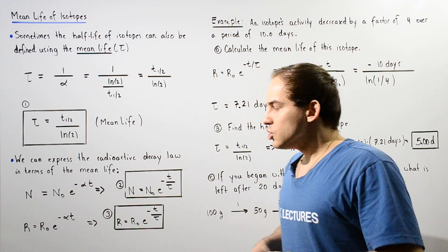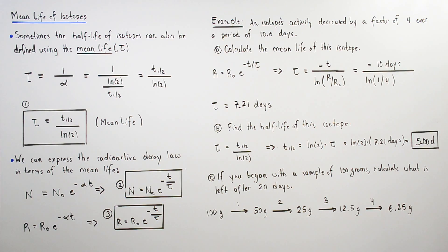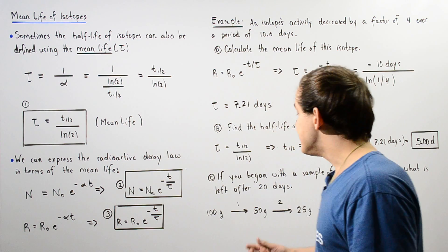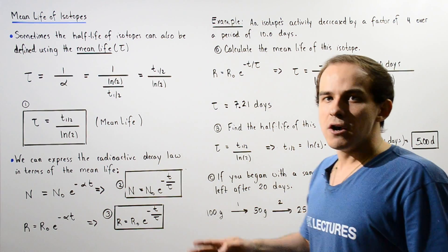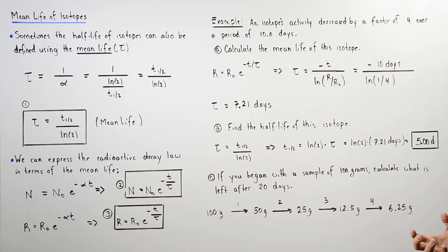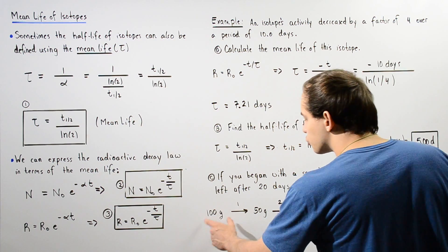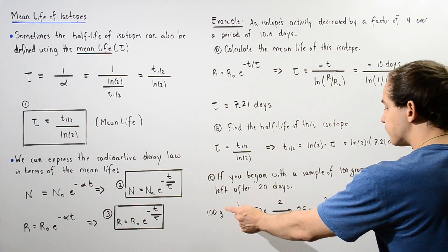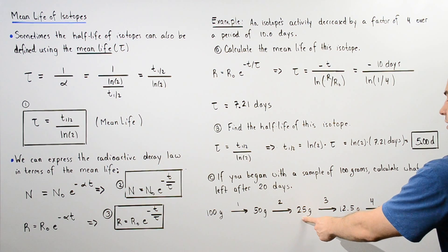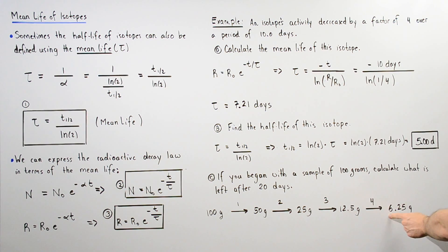For part C, we begin with 100 grams and want to find how much has not decayed after 20 days. Dividing 20 days by the half-life of 5 days gives us 4 half-lives. After each half-life, half the remaining sample decays: after 1 half-life we have 50 grams, after 2 half-lives 25 grams, after 3 half-lives 12.5 grams, and after 4 half-lives 6.25 grams remain.